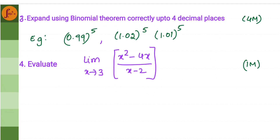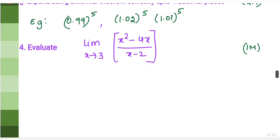Along with the six marker, you will also be given a four marker — a binomial theorem problem which is essentially a decimal expansion. Within four to five steps you will be able to expand the binomial theorem and get the value. There is also a one marker in limits coming in Part A — you just substitute the given x value into the expression and you will get the answer easily.